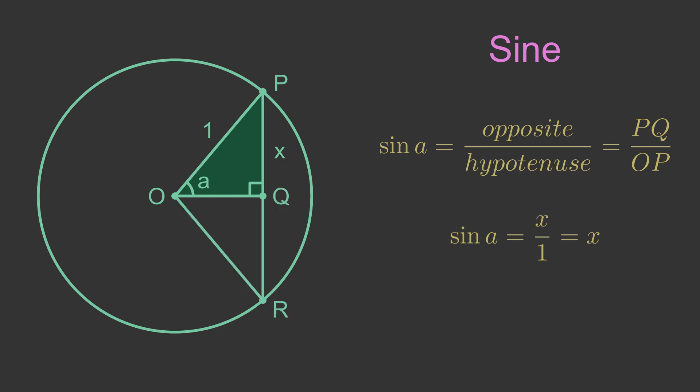Now if we draw a second congruent triangle ROQ, we can see that the line PR forms a chord of the circle. So sine A tells us the length X, which is the length of the side of the triangle that makes up part of the chord PR. We call it the sine function because sine means chord. In fact the length X is equal to half the length of the chord. The sine function was sometimes called the half chord function, although that term is rarely used these days.